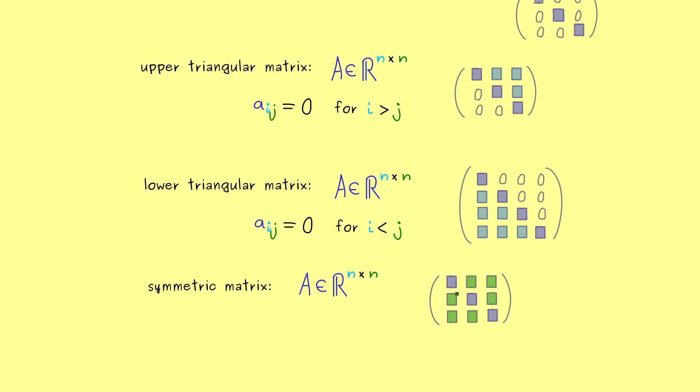More concretely it's possible to reflect the matrix on the main diagonal and we don't change the matrix at all. For example this means this entry here is the same as this entry here.